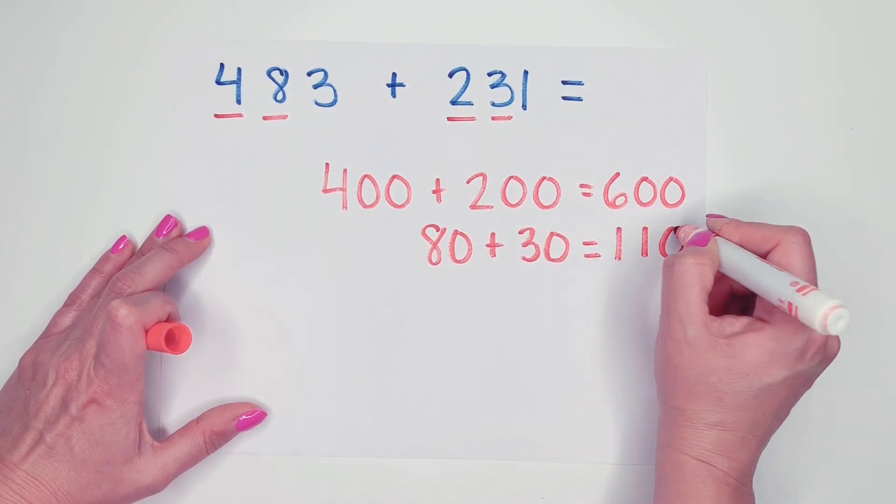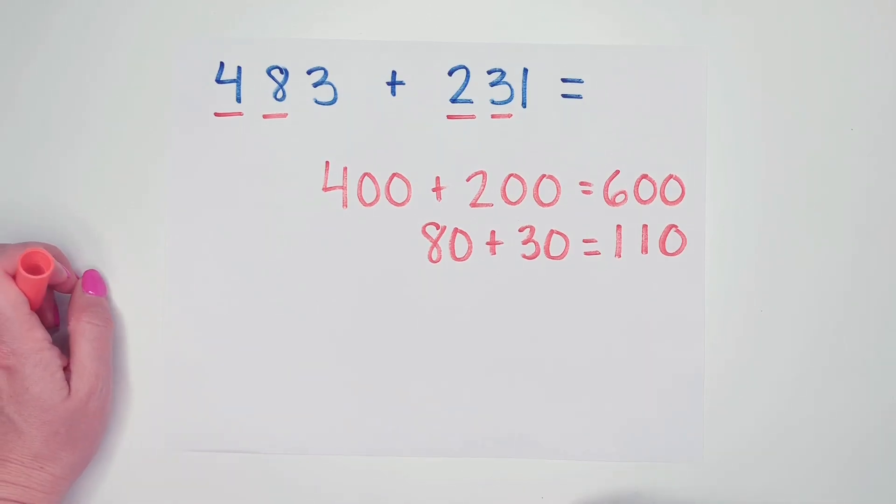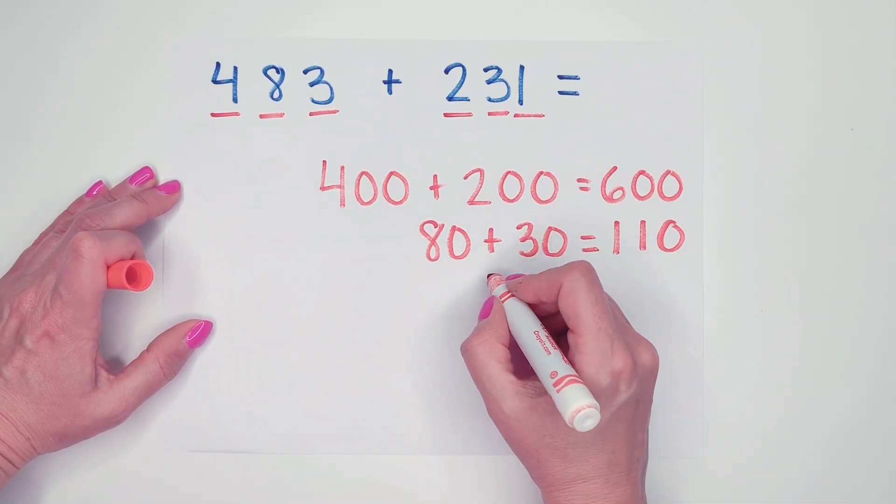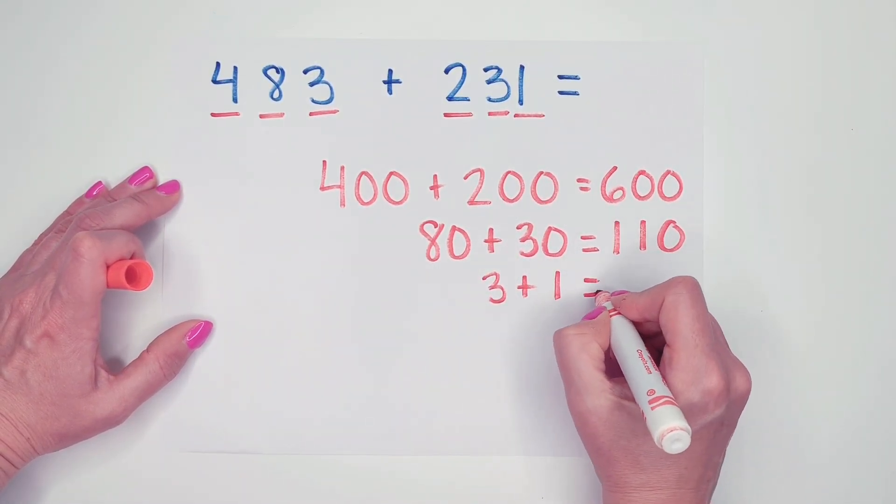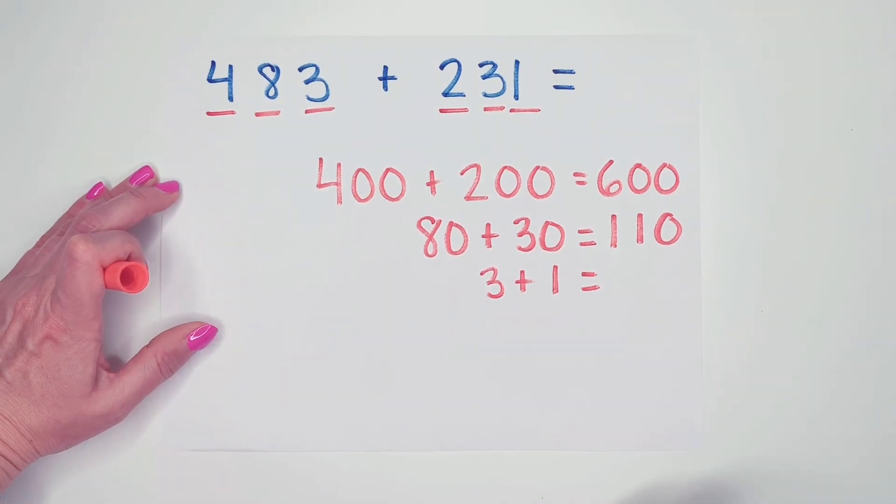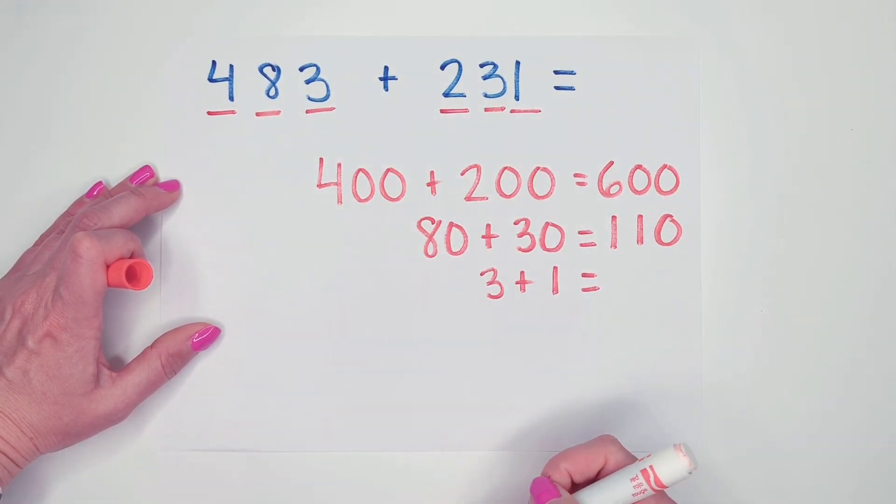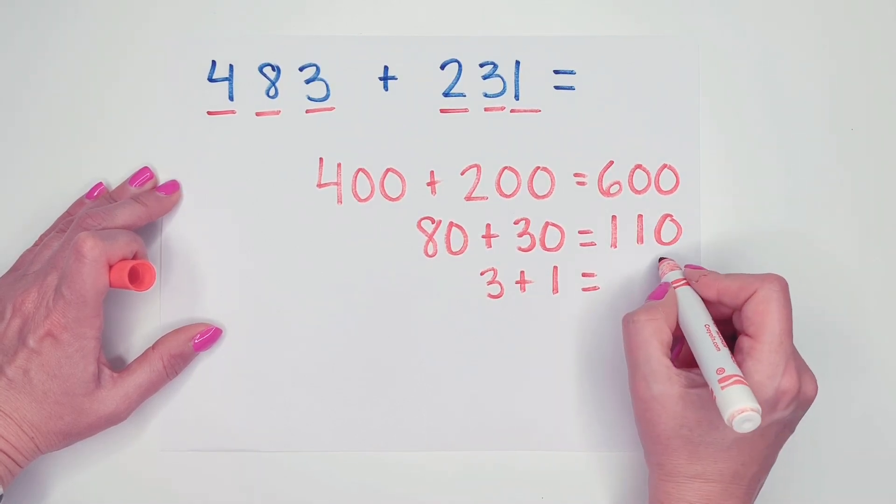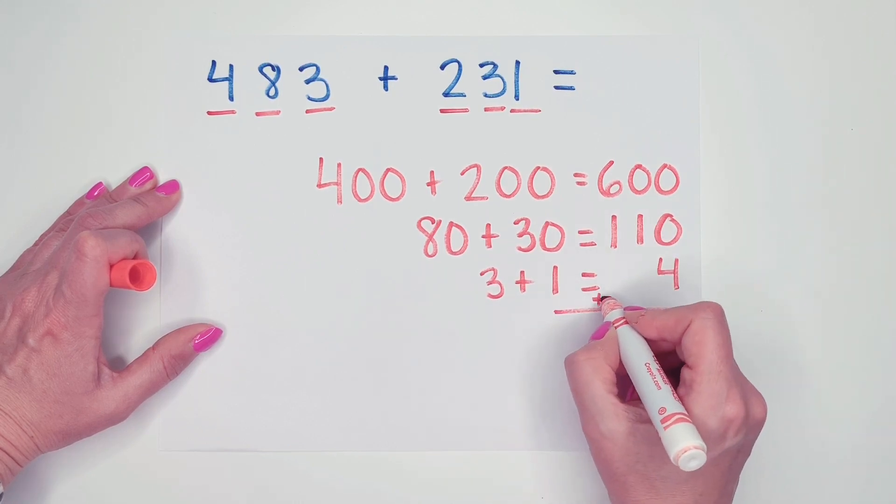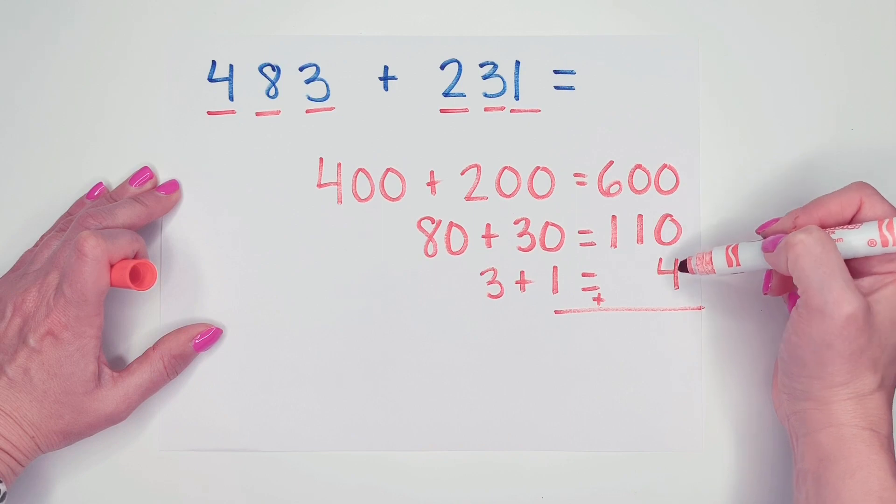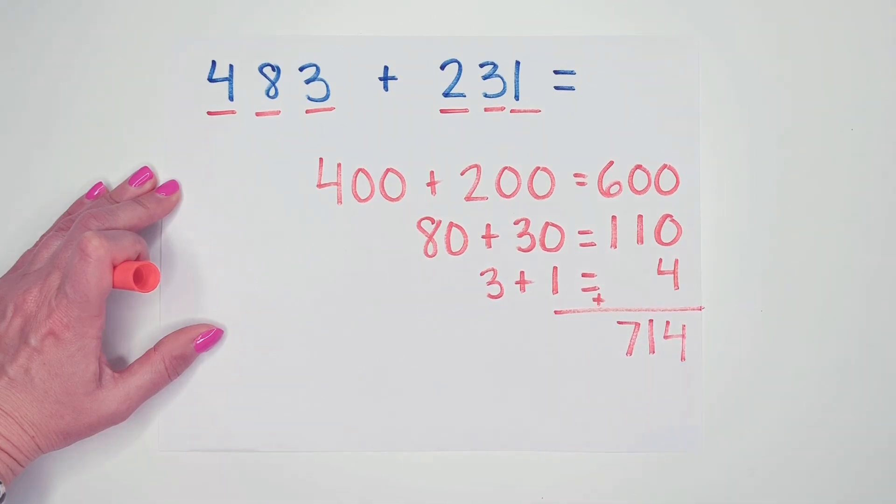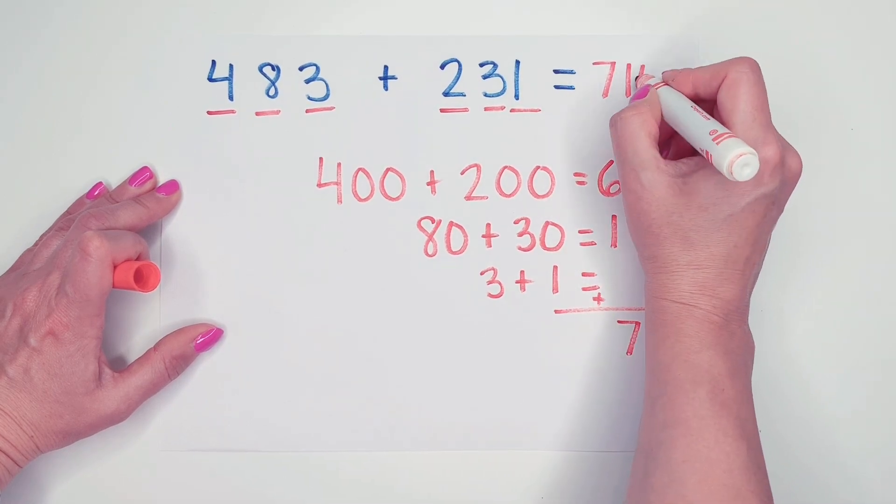I'm going to carefully line up my hundreds and tens and ones so that when I add down, they're in the correct places. Now I need to look at my ones. We have 3 plus 1. My equal signs are lined up and now I need to figure out where I'm going to put my answer to 3 plus 1. I'm not going to put it in my hundreds. I'm not going to put it in my tens. I have to make sure I keep it in my ones. Now I'm going to add down 0 plus 0 plus 4, 0 plus 1, and 6 plus 1. So the answer to 483 plus 231 is 714.